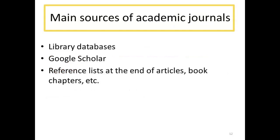While there are many sources of scholarly research, we'll focus on academic journals, which is where you will likely find the types of articles that are appropriate for your literature review. Be sure to use library databases when searching for academic articles. These databases provide access to content not freely available on the web, even in Google Scholar, as well as customized search features and integration with other library services, like requesting the full text of articles for free.